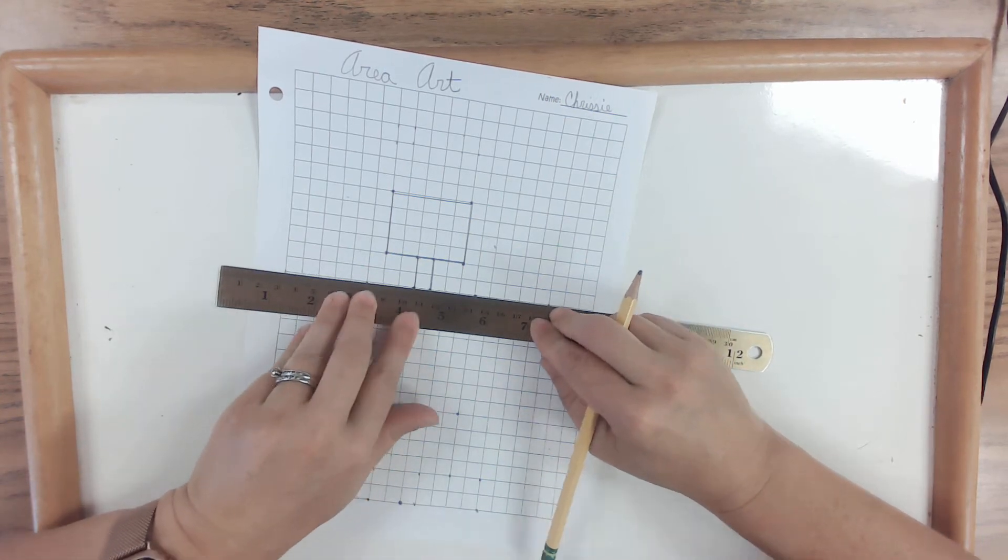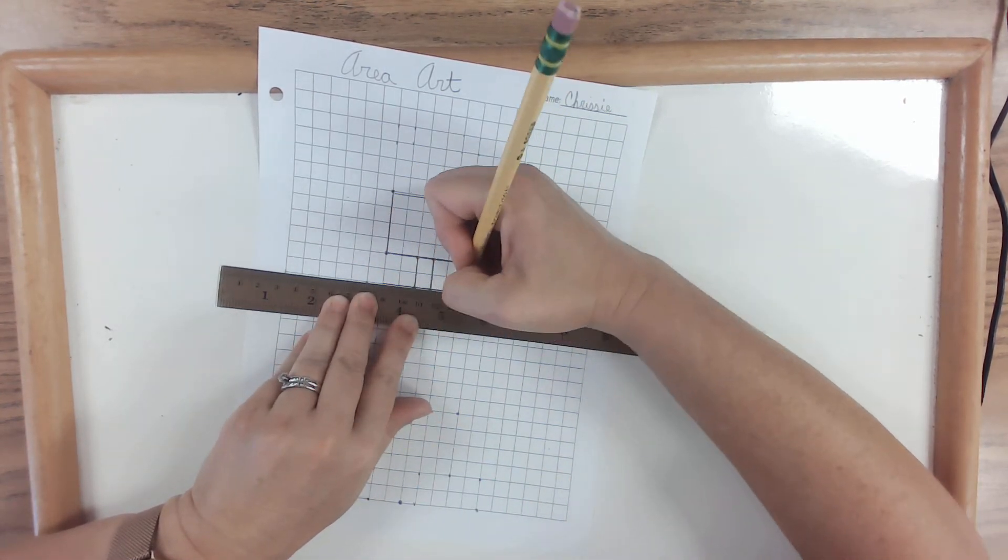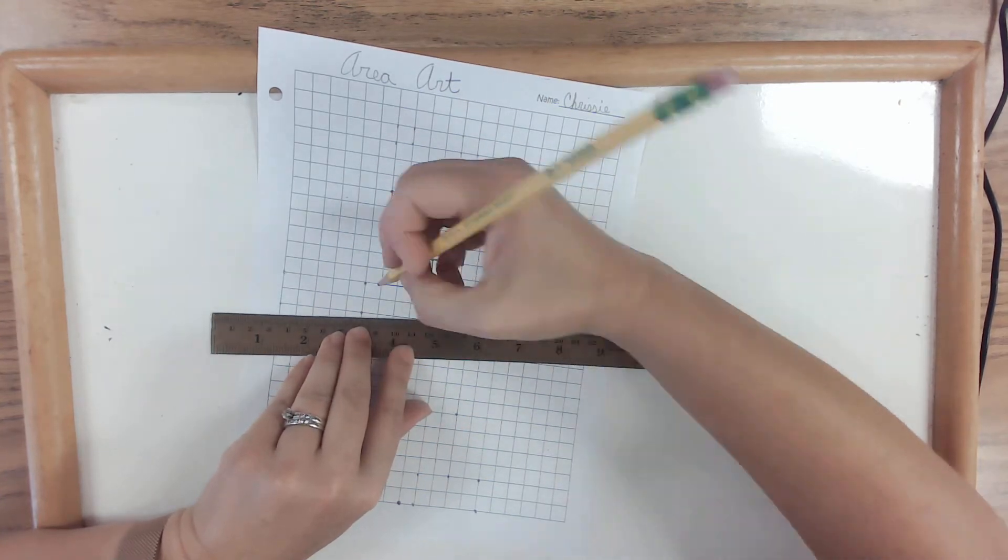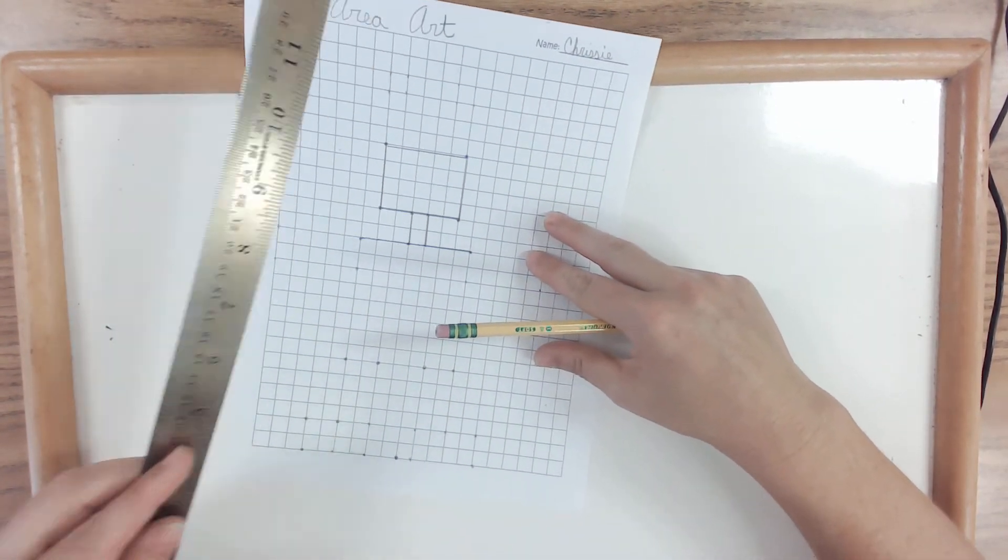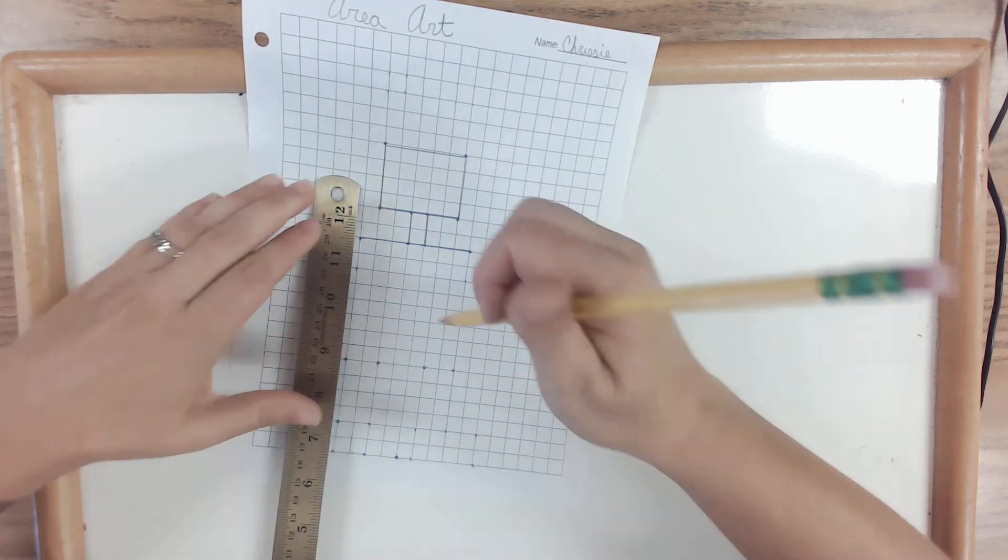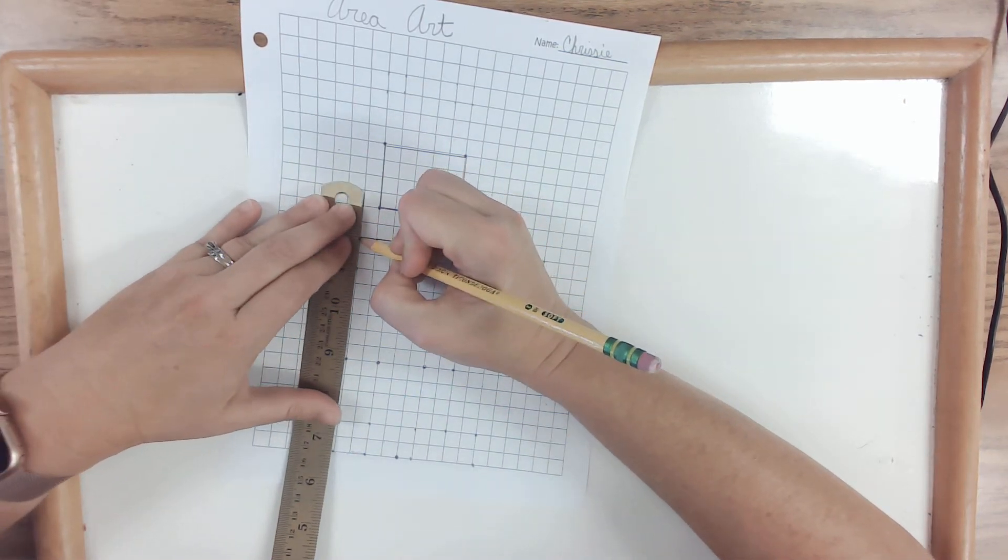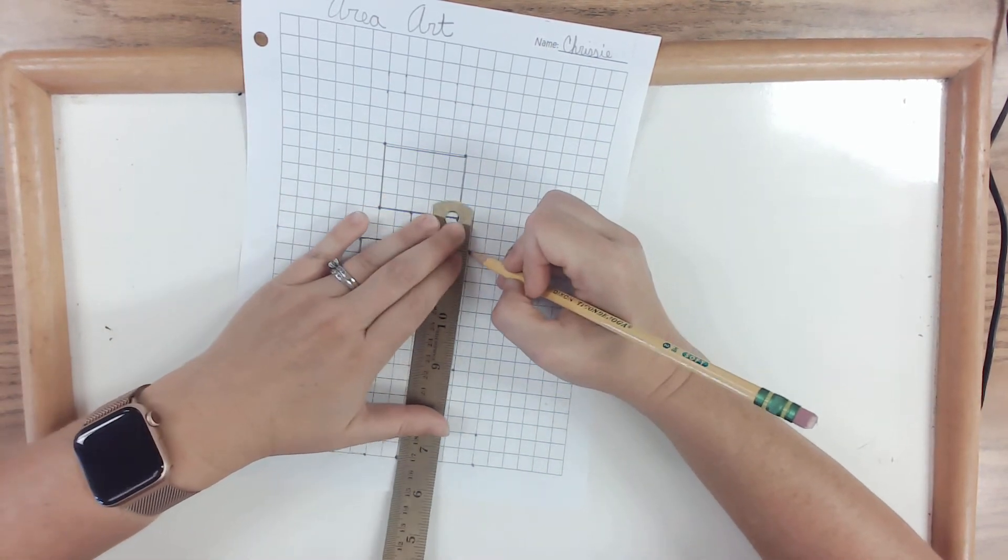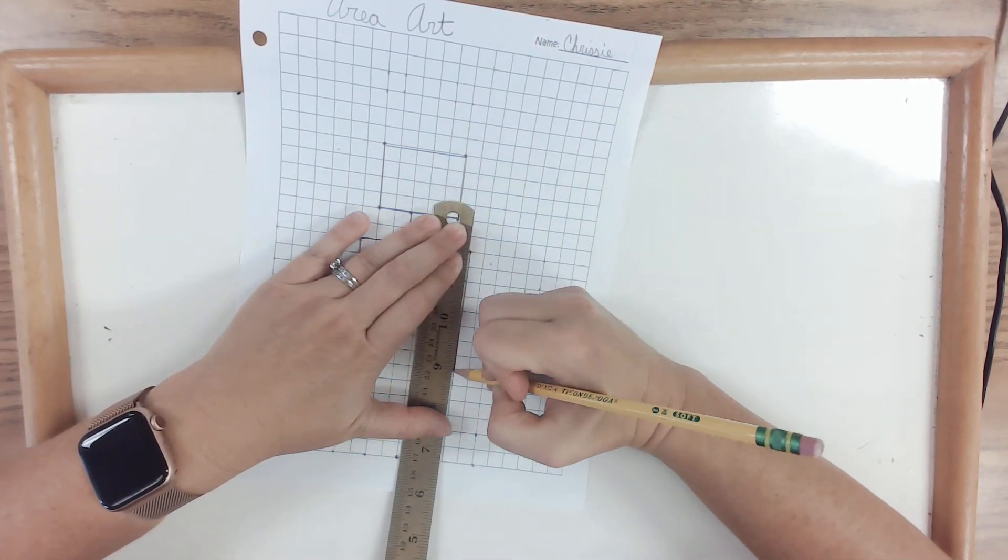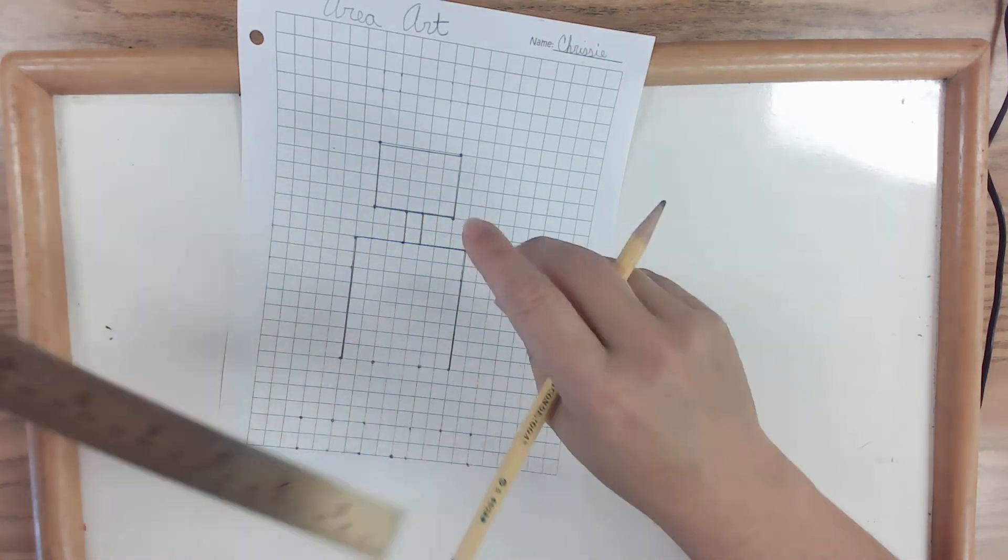Now, this doesn't have a regular shape, does it? And so, it's going to be difficult to just find the area of all these different rectangles. So, what you can do in this case is, you'll just draw it first. And then later, you can separate it into different sections to do your area.